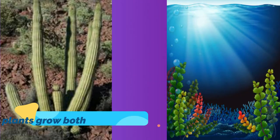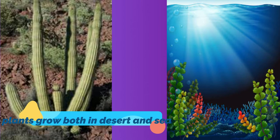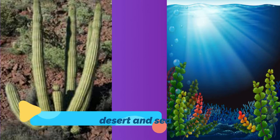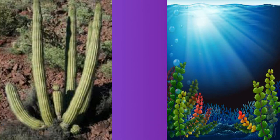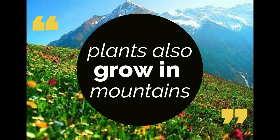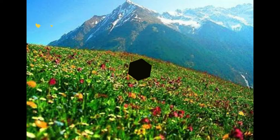They grow on land, mountain, and sea. Here are some photos that plants grow in desert and sea. Plants also grow in mountains, such as Himalayas.